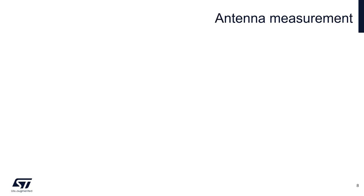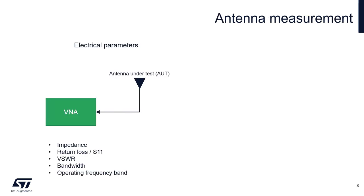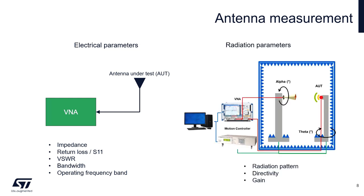Measurement of antennas can be divided into two groups. Measurement of electrical parameters like impedance, return loss, standing wave ratio, bandwidth, or operating frequency band - in this case the antenna is connected directly to the measurement instrument like VNA. The next group is measurement of radiation parameters like radiation pattern, directivity, or gain - the antenna is measured in an anechoic chamber.